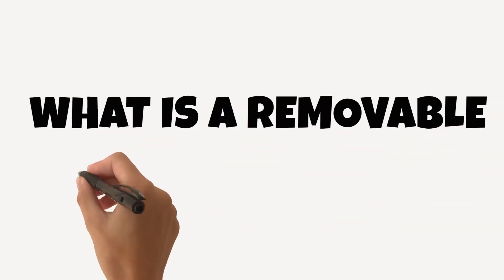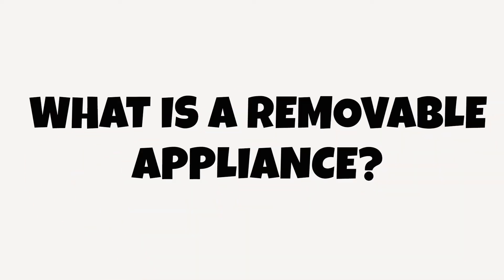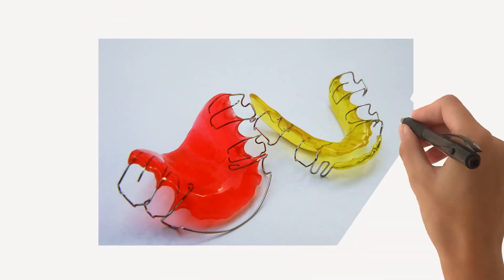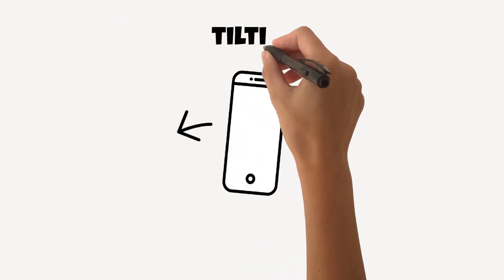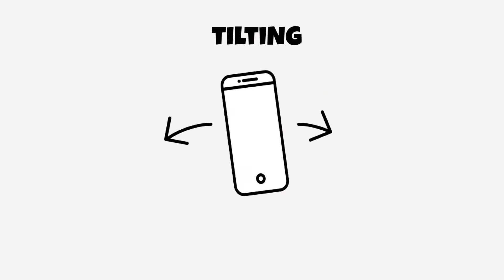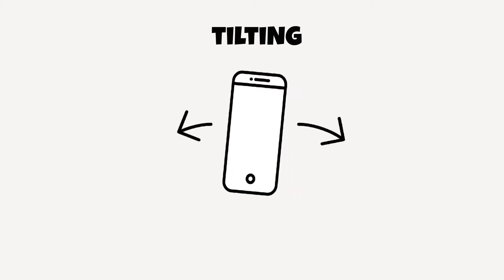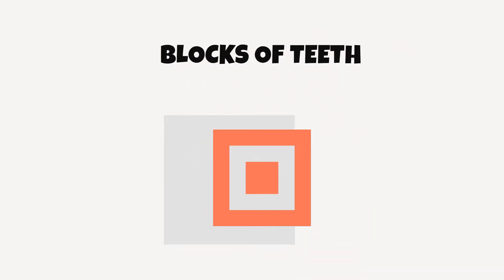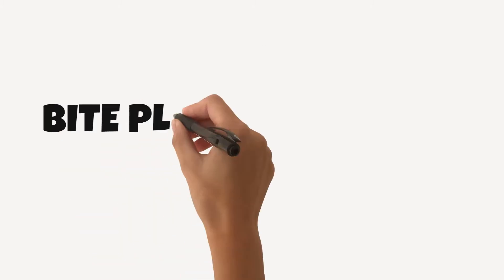So what is a removable appliance? These are single arch appliances that can be removed from the patient's mouth. They can only tilt individual teeth, but can also be utilised to move blocks of teeth. Furthermore, they can be used to allow for differential tooth eruption via bite planes or buccal capping.